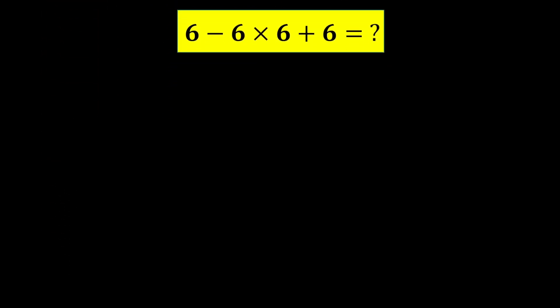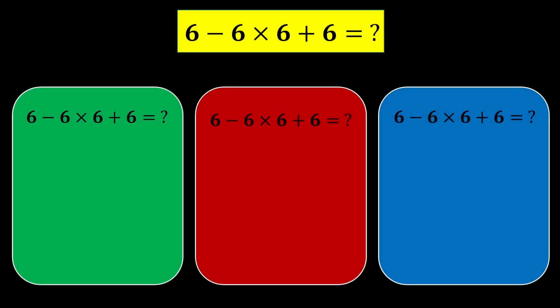To understand the concept of the order of operations, consider this example: 6 minus 6 times 6 plus 6. Three people want to solve this problem. The first person first calculates 6 minus 6, which becomes 0. Then they multiply 0 by 6, which becomes 0. Finally, they calculate 0 plus 6,